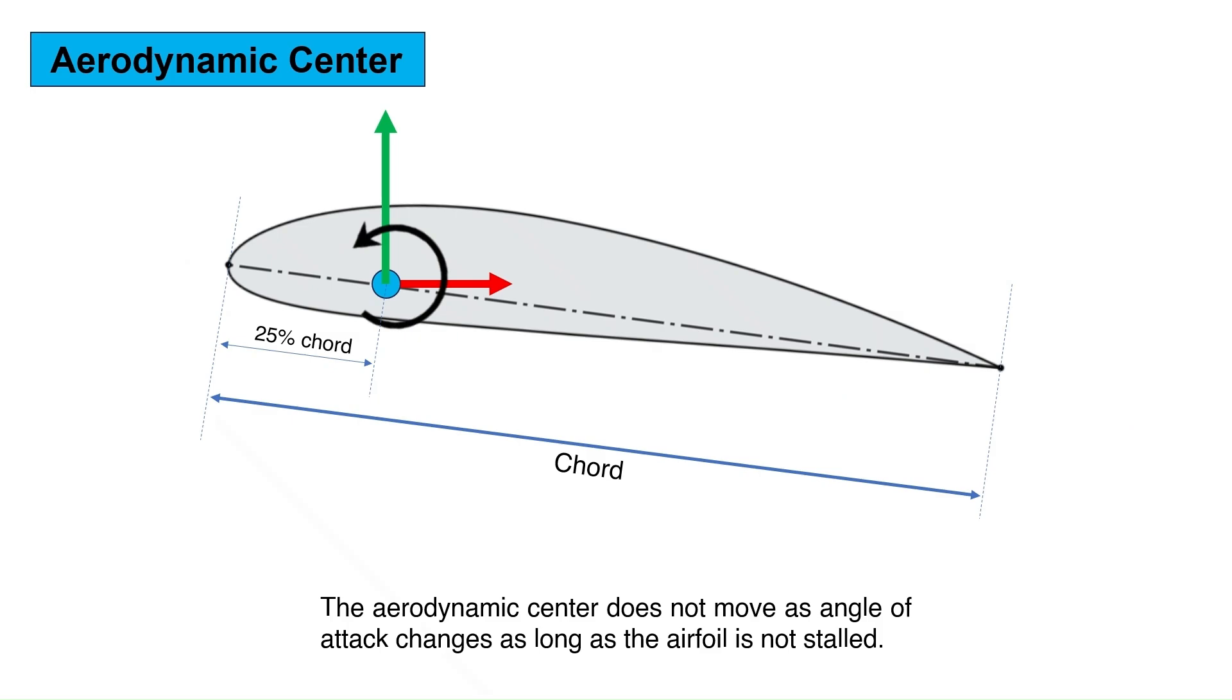The aerodynamic center of an airfoil at subsonic Mach numbers is at or near 25% of the chord. The aerodynamic center does not move as angle of attack changes as long as the airfoil is not stalled.